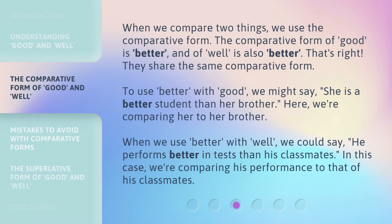When we compare two things, we use the comparative form. The comparative form of good is better, and of well is also better. That's right — they share the same comparative form. To use better with good, we might say, 'she is a better student than her brother,' comparing her to her brother. When we use better with well, we could say, 'he performs better in tests than his classmates,' comparing his performance to that of his classmates.